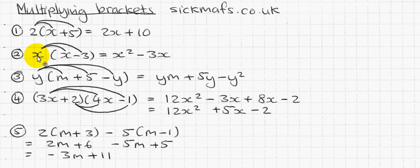So x times x is x squared. Just because a number times itself means squaring. So x times x is x squared. x times minus three is minus 3x. That's what it is.